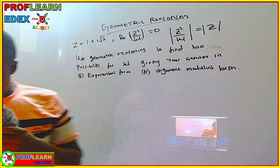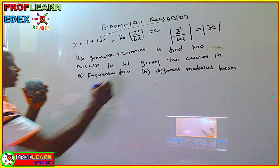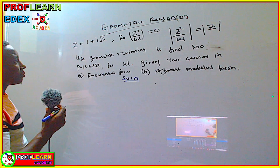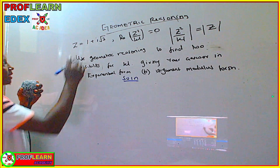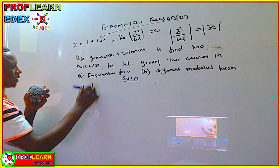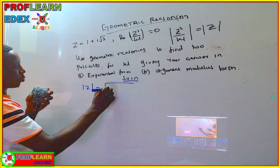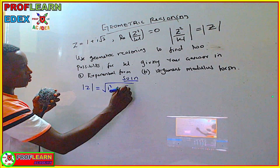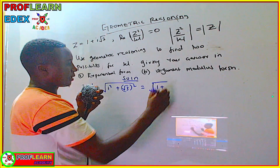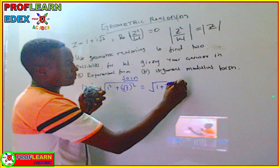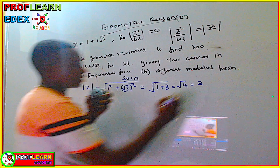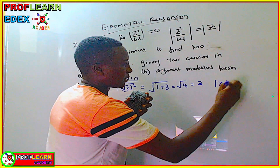First, we find the modulus of z. Modulus of z = √(1² + (√3)²) = √(1 + 3) = √4 = 2. So the modulus of z is 2.